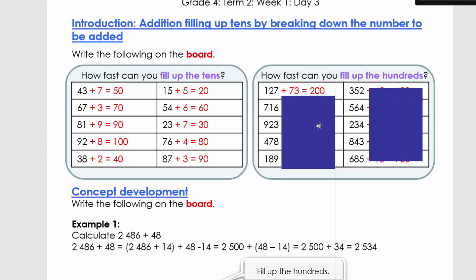So let's look at the next one: how fast can you fill up to hundreds? I'm just going to show you the first one. What we do now is we look at the hundreds. So 127 is between 100 and 200, so what we want to do is fill it up to the next hundred. I need to add 127 plus 73 equals 200. If I go down here, the next one is 716. It's between which two hundreds? It's between 700 and 800. So what I need to do is fill it to 800. You're going to say 716 plus what is 800? I quickly want you to try these three by yourself. Pause the video.